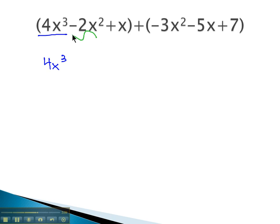Then, we see negative 2x squared, which can be combined with the negative 3x squared, because they're like terms. Both with x squared gives us negative 5 of these x squareds.